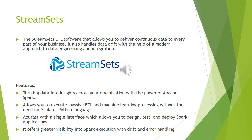The sixth commercial ETL tool is StreamSets. StreamSets is ETL software that allows you to deliver continuous data to every part of your business. It also handles data drift with a modern approach to data engineering and integration. Some features are: it turns big data into insight across your organization with the power of Apache Spark, it allows you to execute massive ETL and machine learning processing without the need for Scala or Python, it offers a single interface to design, test and deploy Spark applications, and it offers greater visibility into Spark execution with drift and error handling.